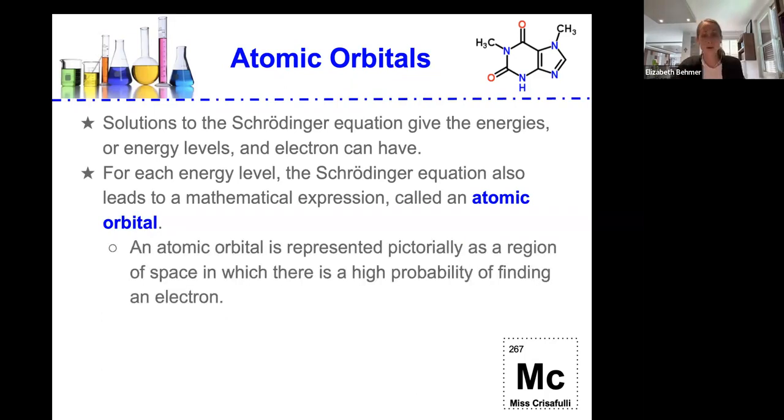An atomic orbital is represented pictorially as a region of space in which there is a high probability of finding an electron. And we'll go through what this means here.